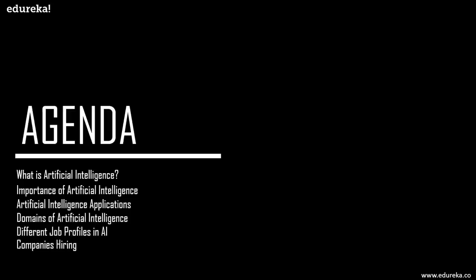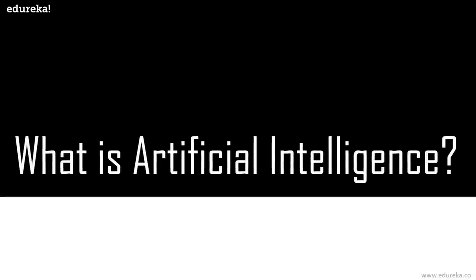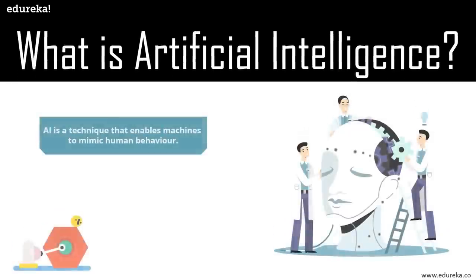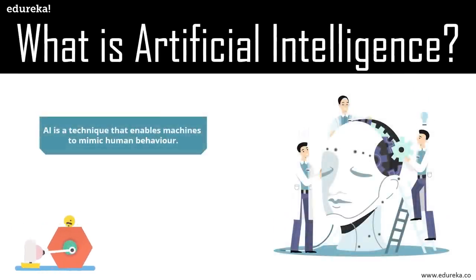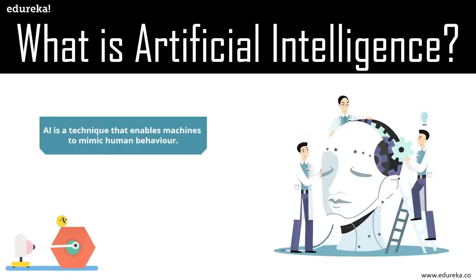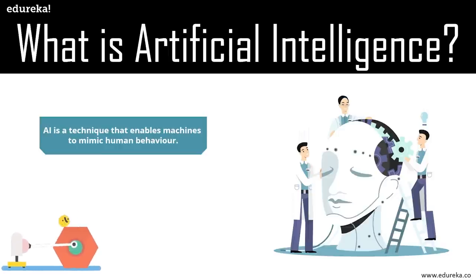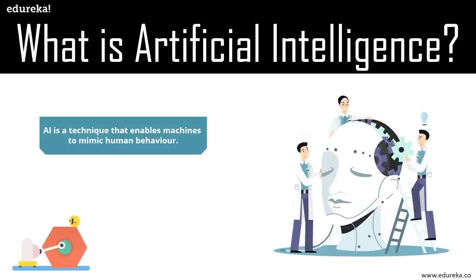Finally, we'll end by focusing on the companies which are hiring for these professionals. So what exactly is AI? AI is a technique that enables machines to mimic human behavior. Artificial intelligence is the theory and development of computer systems able to perform tasks normally requiring human intelligence, such as visual perception, speech recognition, decision making, and translation between languages.